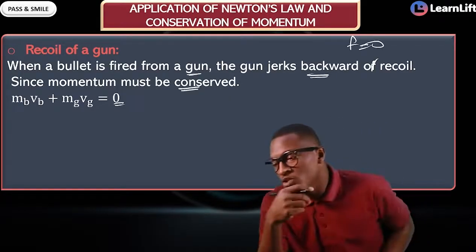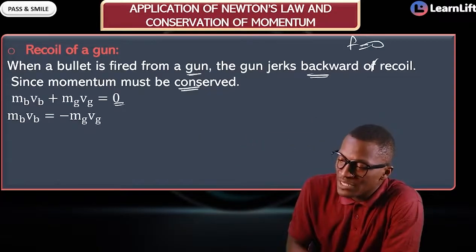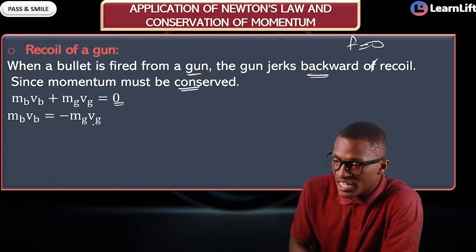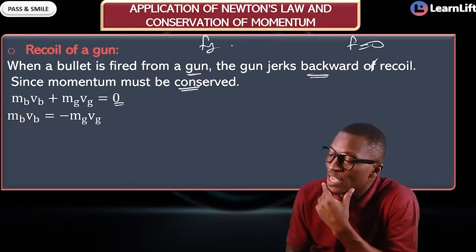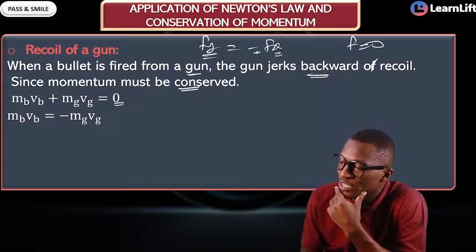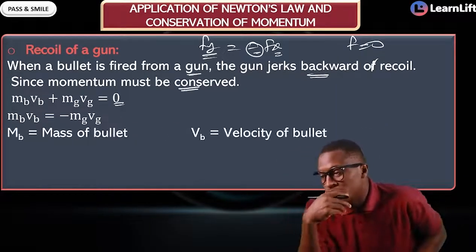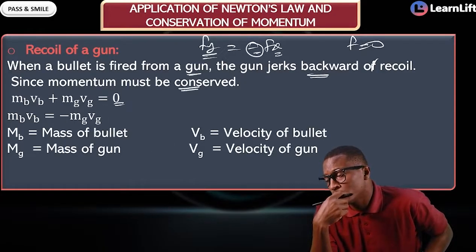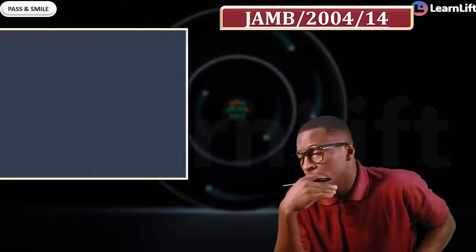Rearranging the formula, mass of bullet times velocity of bullet equals negative of mass of gun times velocity of gun. The negative sign shows that action and reaction are equal but opposite in direction. Here, m is mass of bullet, v_b is velocity of bullet, M is mass of gun, and V_g is velocity of gun.